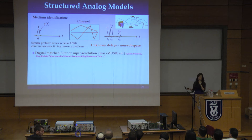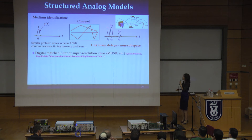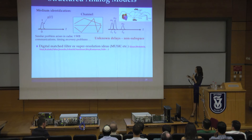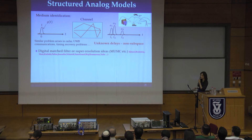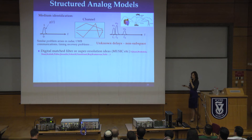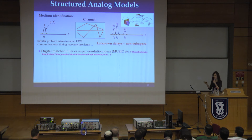Another important problem that appears in many applications is the pulse stream model. In this example, we have a stream of pulses where what we don't know are the times of arrival and the amplitudes of the pulses. This problem appears in radar — where the different pulses come from different targets — in ultra-wideband communication where different pulses come from different paths, and in ultrasound. Because this problem appears in so many different domains, there has been a lot of work in the signal processing literature in trying to recover these times of arrival and amplitudes.